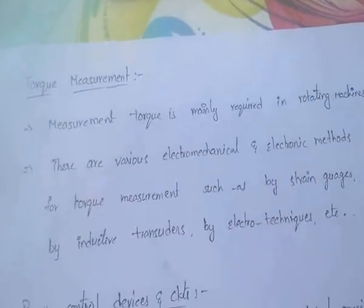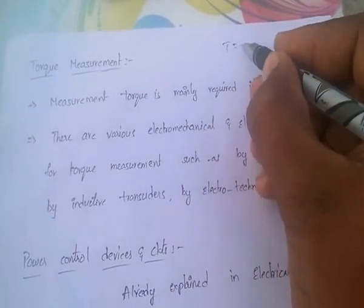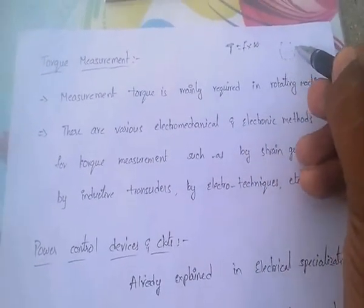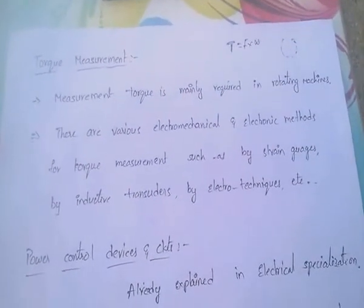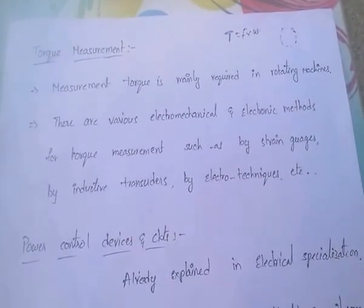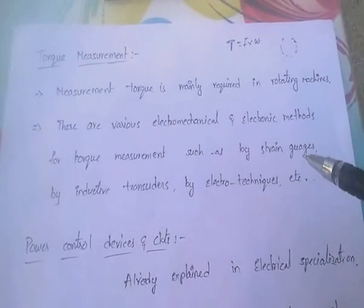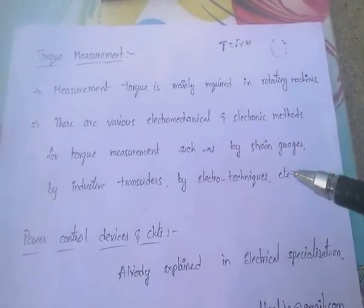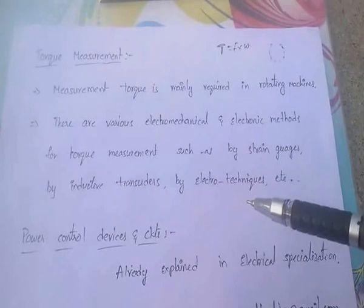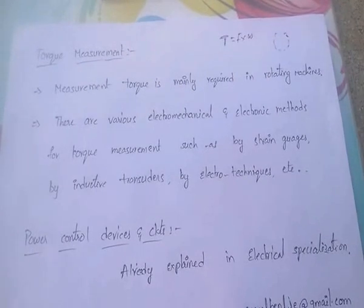Finally, measurement of torque. Torque is nothing but rotational force. The measurement of torque is mainly required in rotating machines. There are various electromechanical and electronic methods for torque measurement, such as by using strain gauges, inductive transducers, and electro-optical techniques. These transducers are used for the measurement of torque.